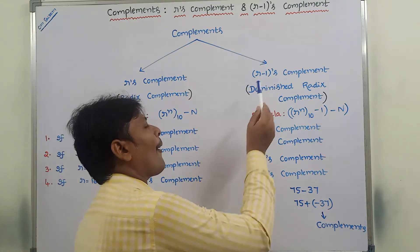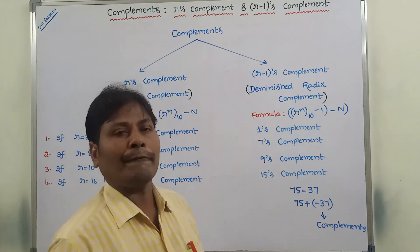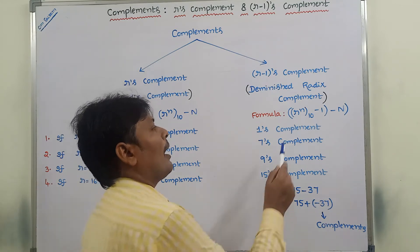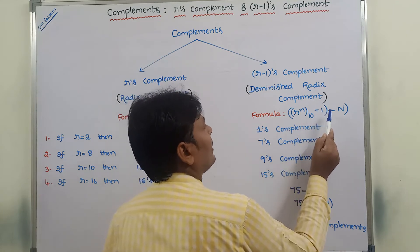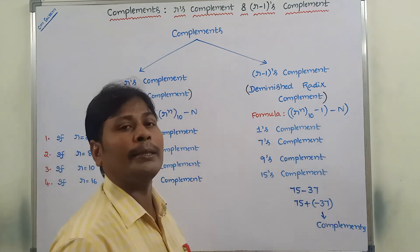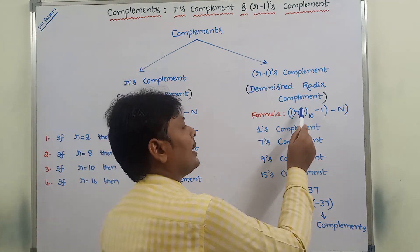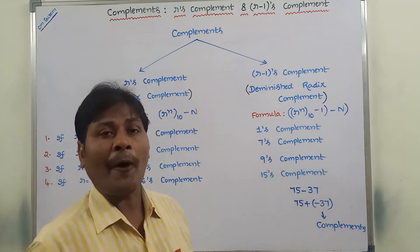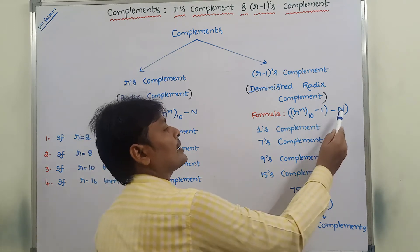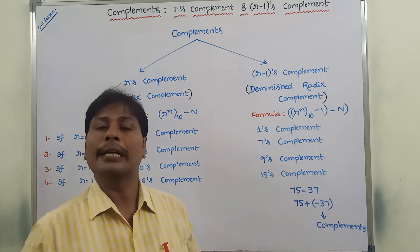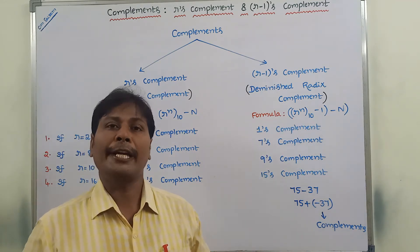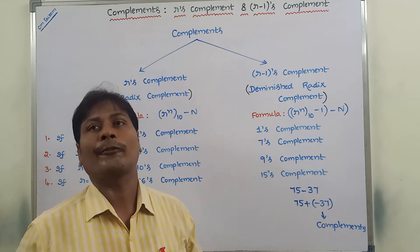Whereas in the case of the formula for finding out R-1's complement, it is R^N (base N) minus 1, minus N. Here, R is nothing but base or radix, N is nothing but number of digits in the given number, and capital N is nothing but the given number. By using this formula, we can find out any complement of any number.